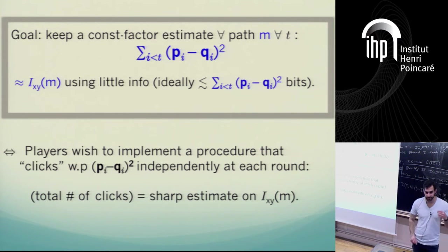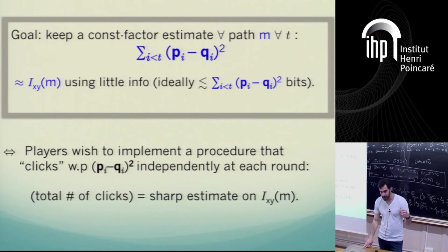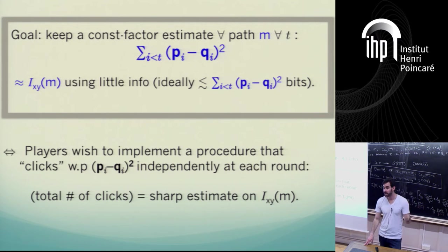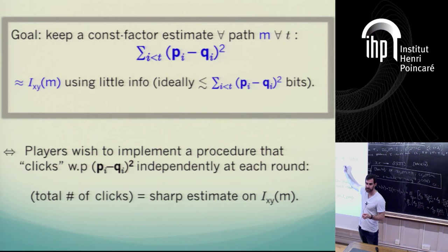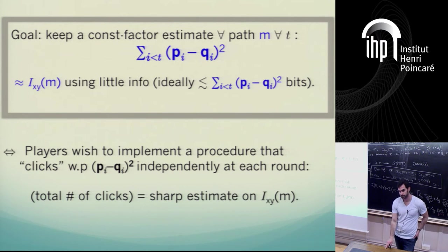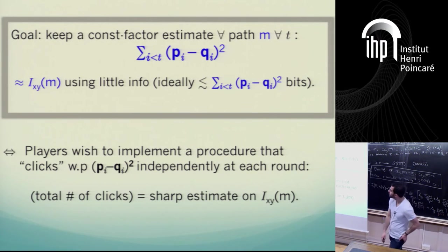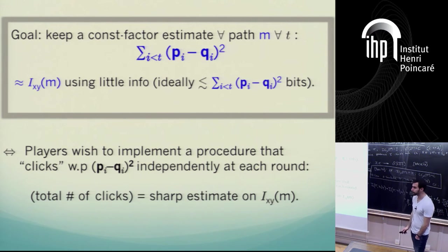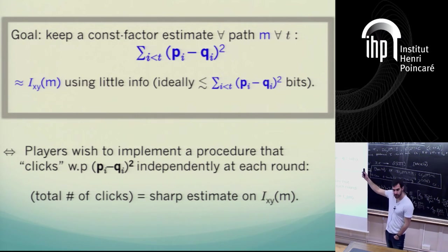If you just consider one step as a separate communication problem — one party has p, the other has q — and they want to compute the difference between p and q with small information complexity. Well, p and q are numbers between zero and one. The information complexity of adding or subtracting two numbers is a known problem. I guess this is a special case.